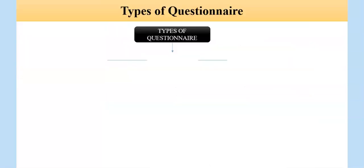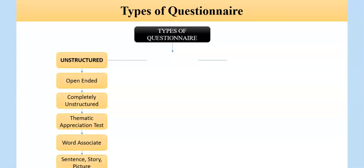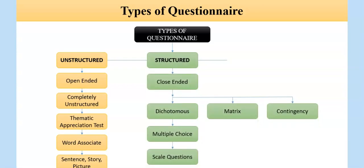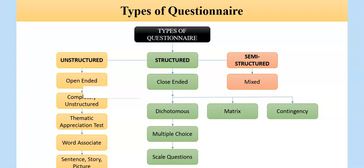There are three types of questionnaires: unstructured, structured, and semi-structured. Unstructured questions include open-ended, completely unstructured, thematic, word association, sentence, story, and picture types. In structured questionnaires, we find close-ended questions including dichotomous, matrix, and contingency types; dichotomous leads to multiple choice and then scale questions. Semi-structured is a mixed format combining both structured and unstructured, chosen as per the requirement of the research.